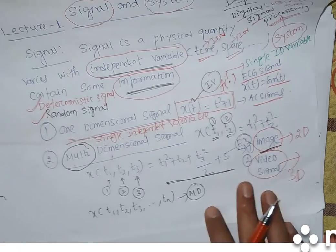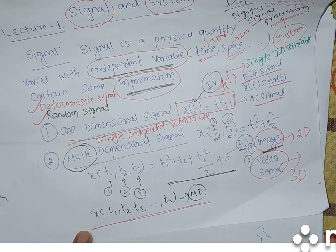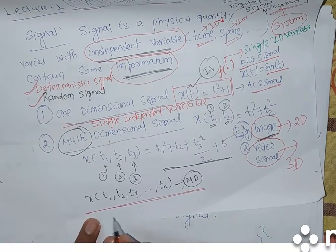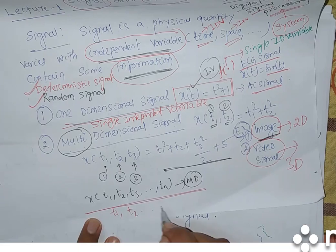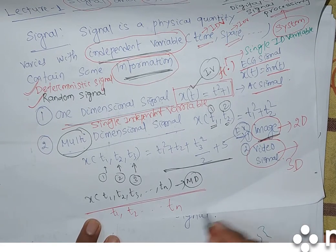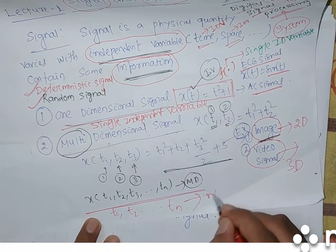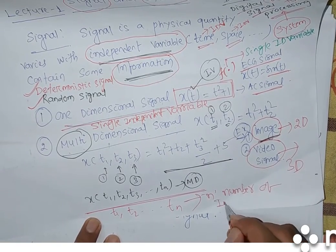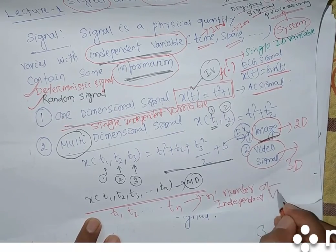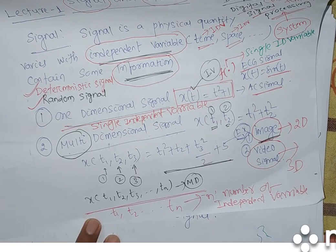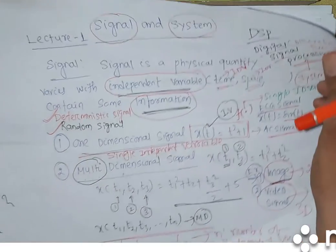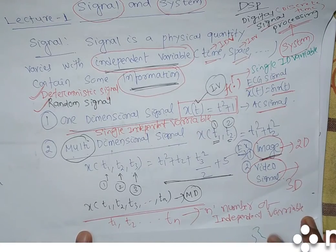Image is a two-dimensional signal and video is a three-dimensional signal. In general, x(t1, t2, t3, ..., tn) — these all are multidimensional signals. Here the number of independent variables is n: t1, t2, up to tn. These are the n number of independent variables — this is a multidimensional signal.